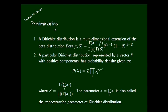Now we move on to some preliminaries: the definition of the beta distribution and the Dirichlet distribution. A Dirichlet distribution is a multidimensional extension of the beta distribution — that is the main point. The beta distribution is defined as: Γ(α+β) / [Γ(α)·Γ(β)] · θ^(α−1) · (1−θ)^(β−1). The beta function has two inputs, α and β, which are the lower and upper limits. The expression Γ(α+β) / [Γ(α)·Γ(β)] is an entire constant fraction.